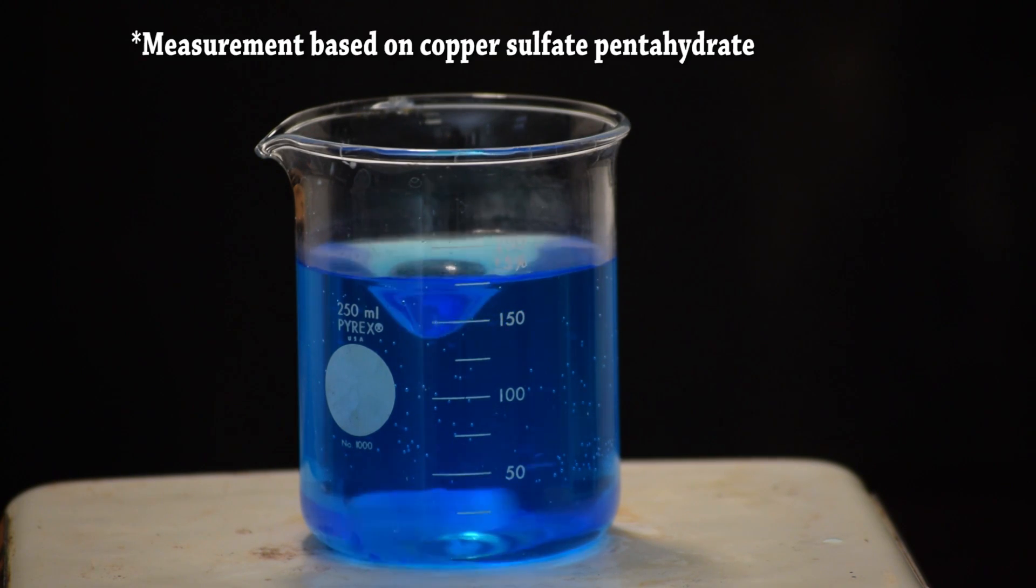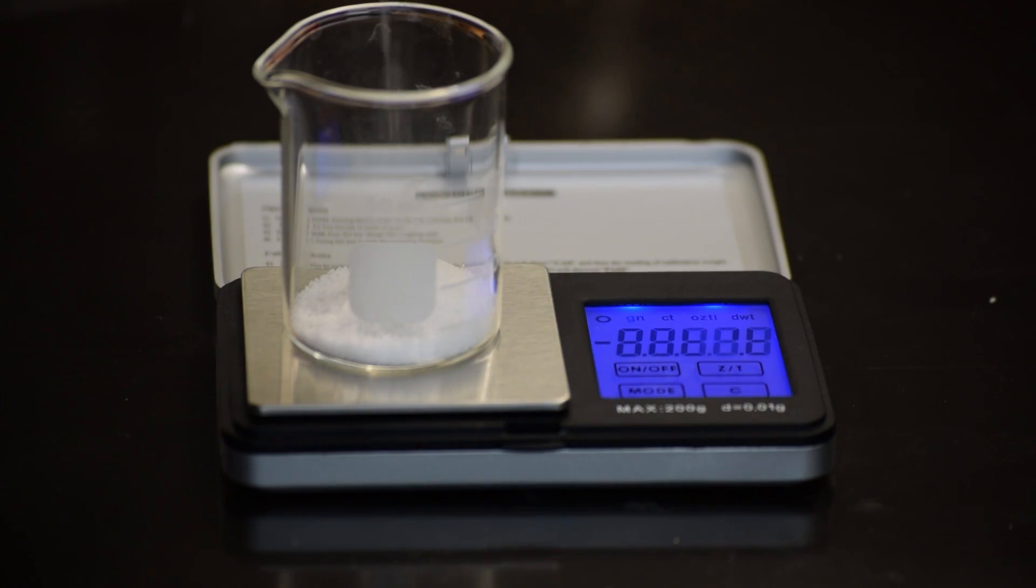First I dissolved 25 grams of copper sulfate in water. Then I measured out 10 grams, which is a slight excess for this reaction, of sodium hydroxide.